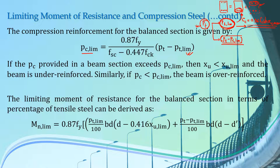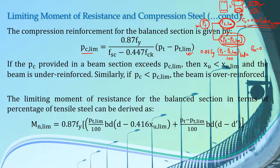In the first case the tensile force was balanced by the compressive force of the concrete, whereas in the second case the tensile force due to the remaining steel, PT minus PT limiting, is balanced by the compressive force in the compression reinforcement only. Considering the equilibrium of this second part, the tensile force due to PT minus PT limiting is 0.87 FY into AST, and that AST can be replaced by (PT minus PT limiting) divided by 100 into BD. This is balanced by the compressive force in our compression reinforcement, given as FSC minus 0.447 FCK into PC limiting over 100 into BD. Rearranging this equation in terms of PC limiting gives us the formula.